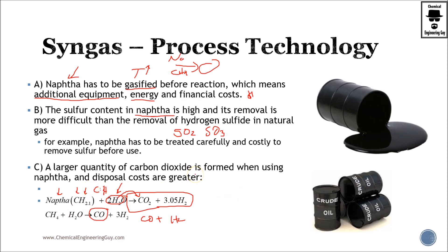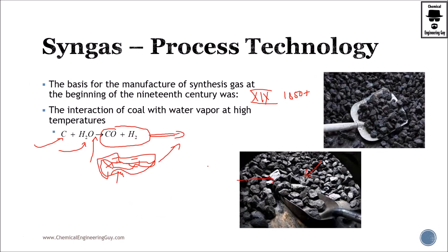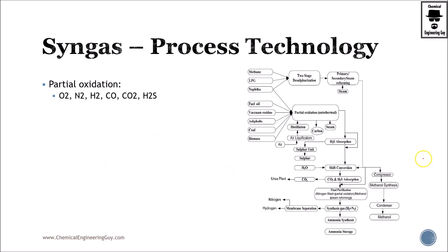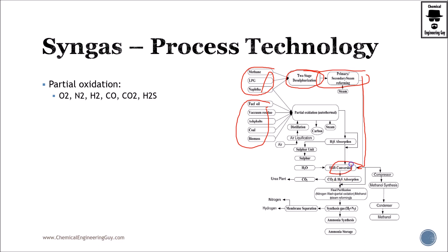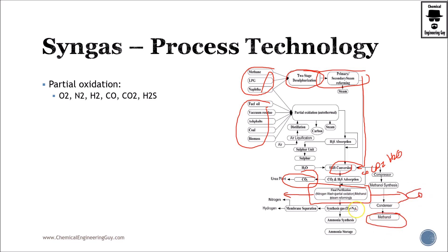So that was all about syngas. Syngas is extensively used in the industry — the main idea is to take a liquid, solid, or gaseous fuel, remove the sulfur content, reform it, and use the famous shift conversion. You get CO, CO₂, hydrogen gas, and some vapor. Then via purification you remove CO₂, separate hydrogen gas from CO, and use the syngas either as a fuel or as a petrochemical feedstock.